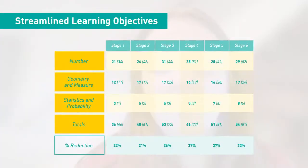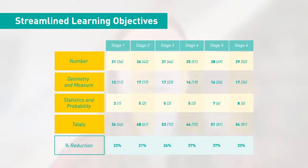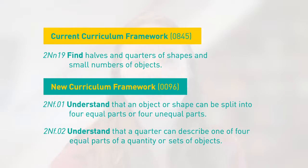Thinking and working mathematically is probably the key change to be aware of for the curriculum. There's also been a streamlining of the learning objectives — there are far fewer now due to removal of overlaps and duplications. The mathematical content itself hasn't been reduced; it's just been made more concise and more balanced across stages. The objectives have also been slightly rephrased so that there's more of a focus on expected learning rather than expected output, with a change from terminology like 'find' to 'understand', emphasising mastery of concepts rather than base core knowledge.